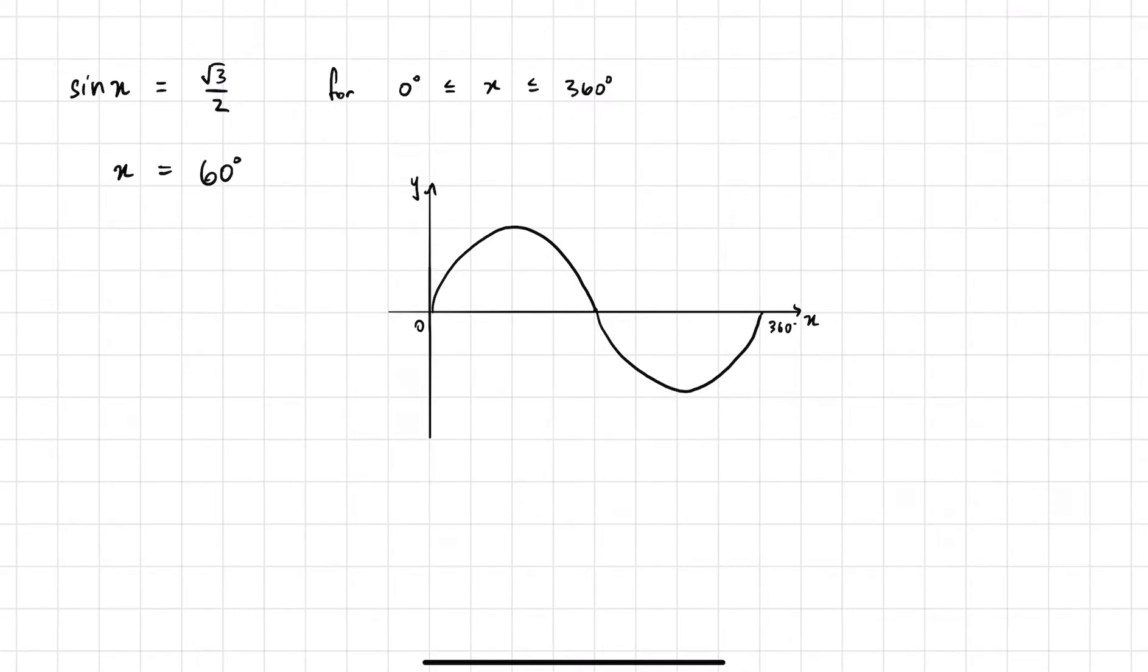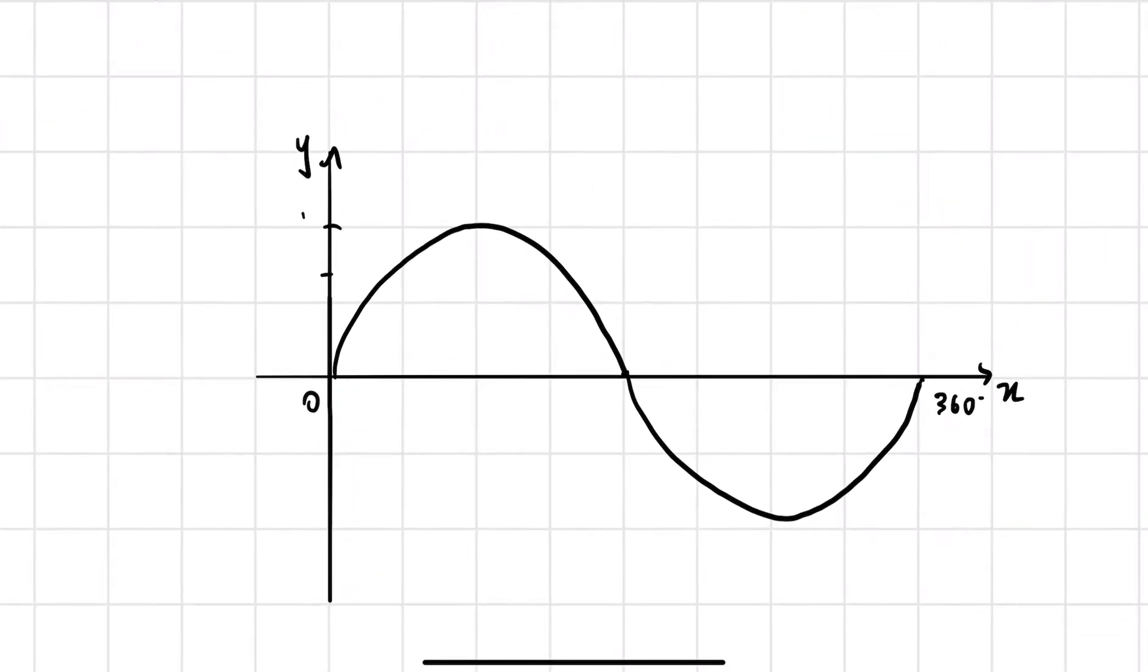Now root 3 on 2 is, since this is 1, root 3 on 2 if you put into your calculator, it should be a value less than 1. So I'm going to say, let's say like here, let's zoom in and say root 3 on 2. And we're basically asking when does it equal to root 3 on 2. And the answer is here and here.